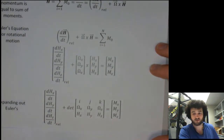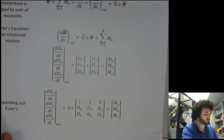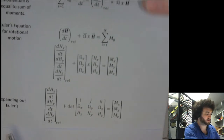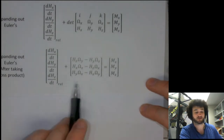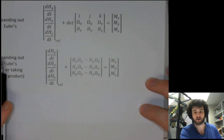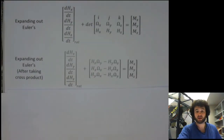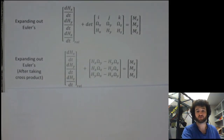If you don't know how to take a cross product, you need to contact a tutor sooner rather than later, because it's quite important. After expanding out this cross product, we end up with another form of Euler's equation — exactly the same as before, only expanded out. Recall the meaning of hx, hy, and hz: they are simply the components of angular momentum given by the inertia matrix times the angular velocity of the body.